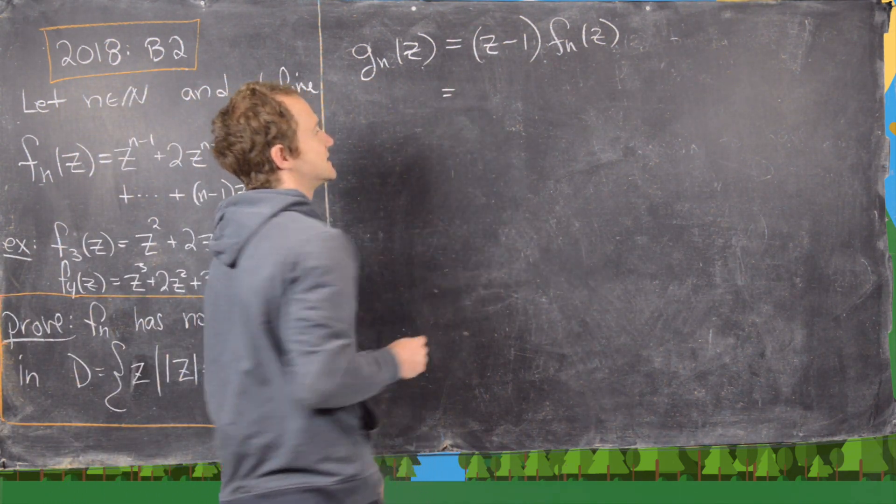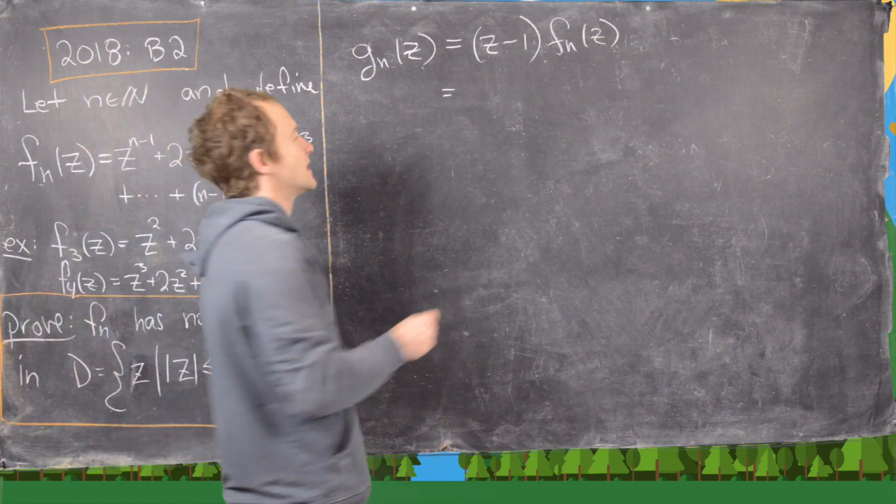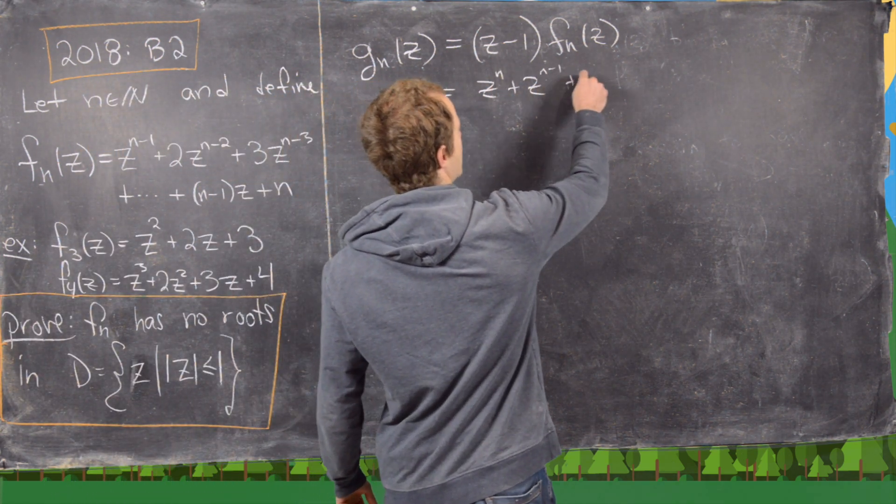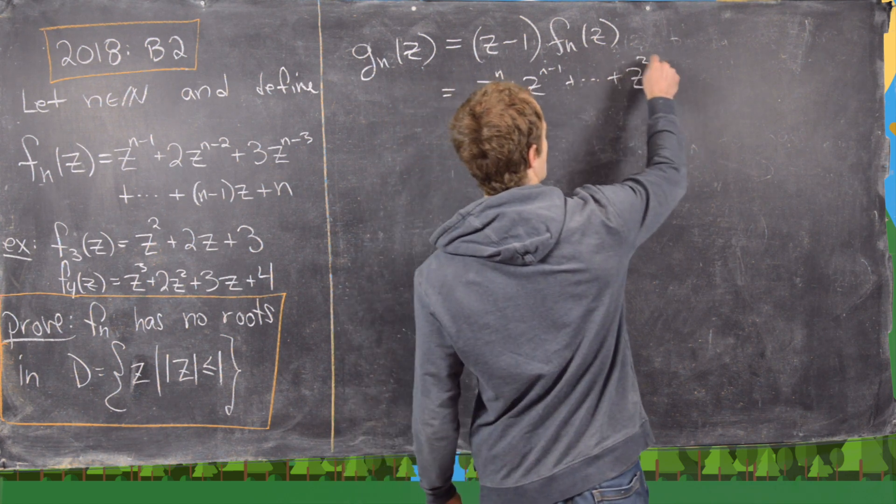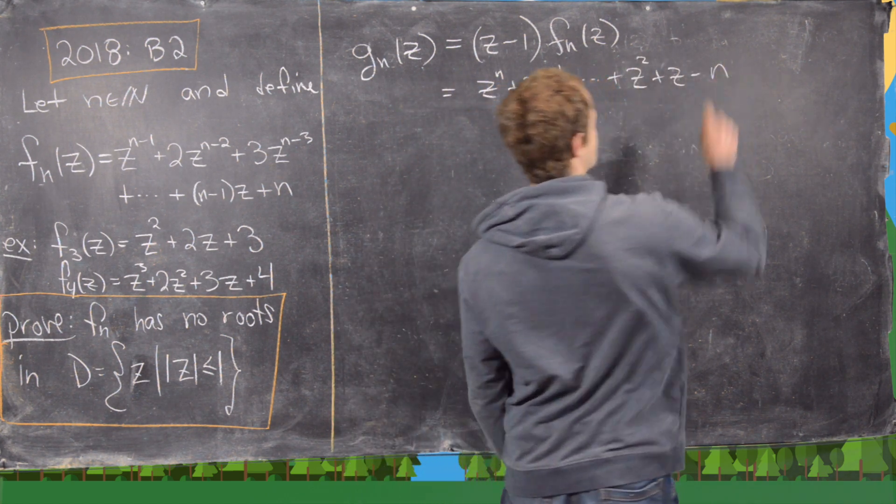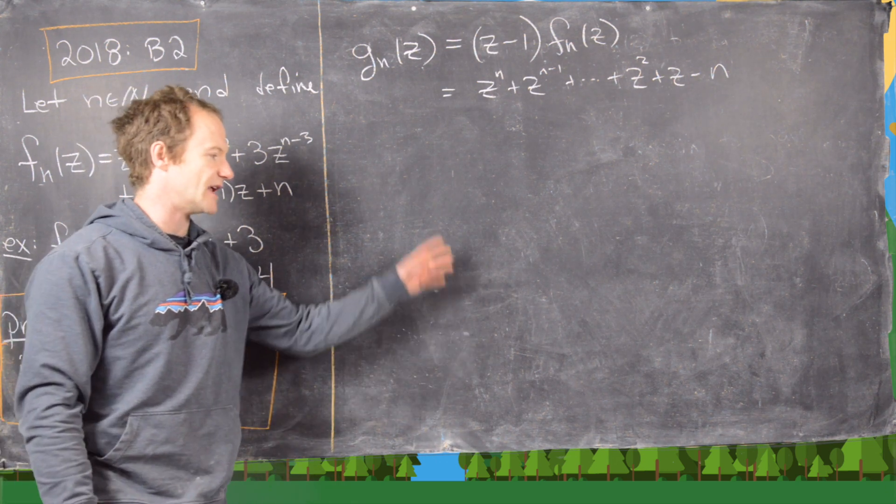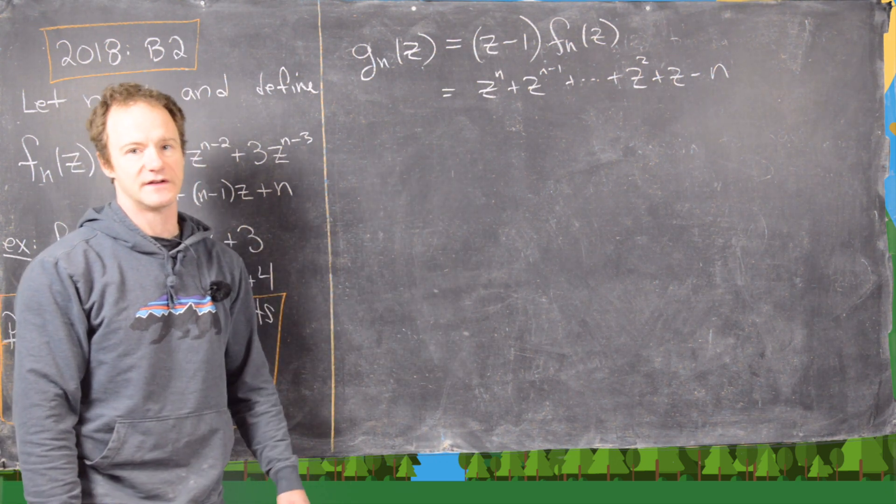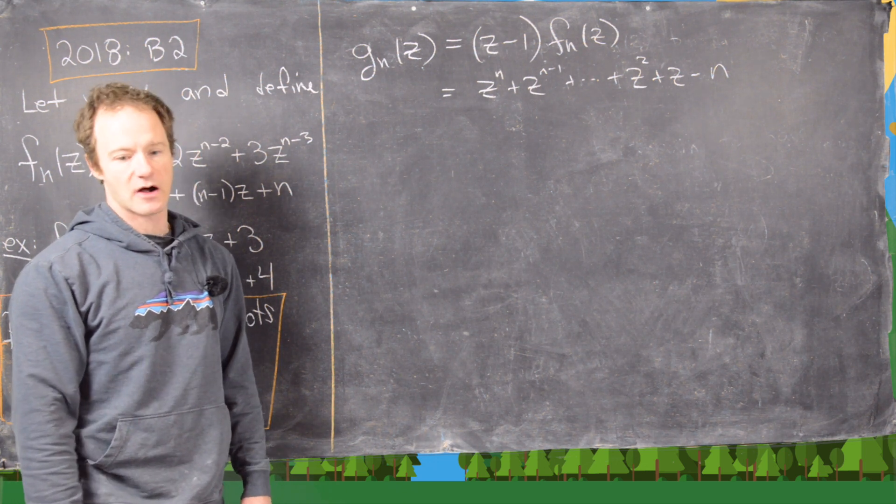Notice that is going to be zn plus zn minus 1 plus all the way down to z squared plus z minus n. That's actually pretty easy to check and it's fairly obvious from this example we did before. So I'll let you work out all the details for this pretty simple calculation.